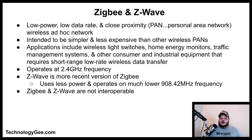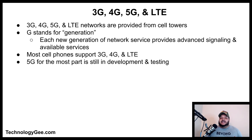Zigbee is a low-power, low-data-rate, close-proximity personal area network standard. It is intended to be simpler and less expensive than Bluetooth or Wi-Fi. Applications include wireless light switches, home energy monitors, and traffic management systems requiring short-range, low-rate wireless data transfer. Zigbee operates at 2.4 GHz. Z-Wave is a more recent alternative that uses less power and operates on the lower 908.42 MHz frequency. Zigbee and Z-Wave are not interoperable.